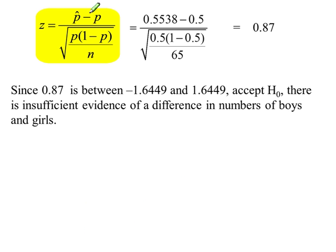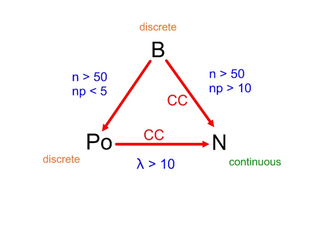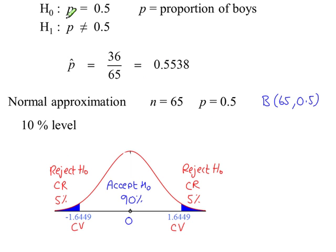Remember that in the formula, this is the only value here where you put in p-hat, just this one. The other instances of p are what you've put down for H0 and H1, 0.5.